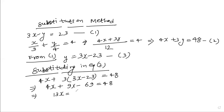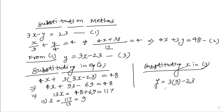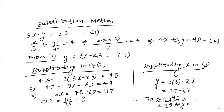So x = 117 ÷ 13 = 9. Now substitute x = 9 into equation 3: y = 3(9) − 23 = 27 − 23 = 4. We've found both values.